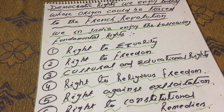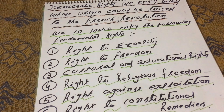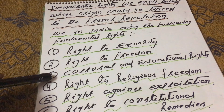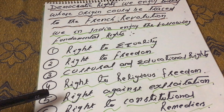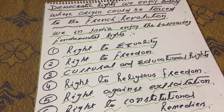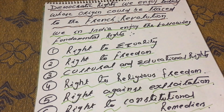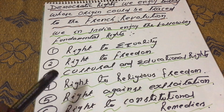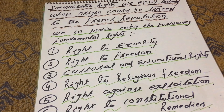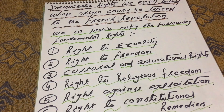If you go around the world, almost all countries have mentioned these six rights: right to equality, right to freedom, cultural and educational rights, right to religious freedom, right against exploitation, and right to constitutional liberties. In India we have eight fundamental rights, but these six fundamental rights we have received from the French Revolution, and they are written in our Constitution of India.